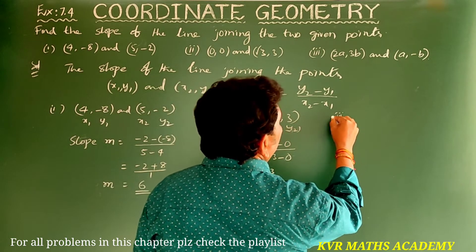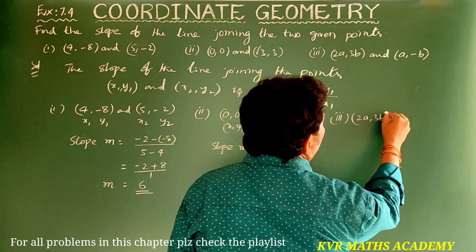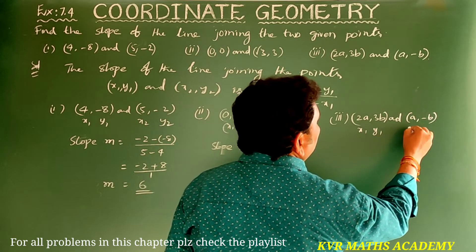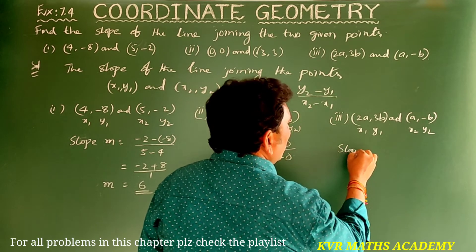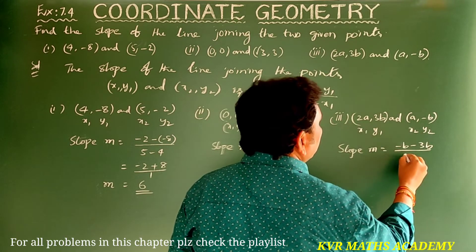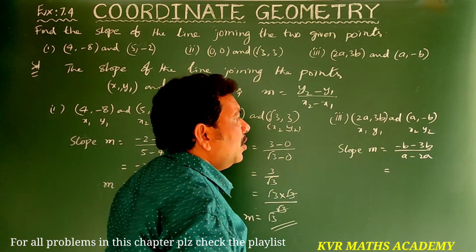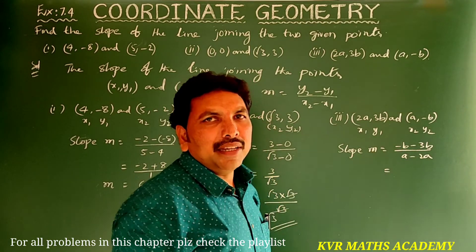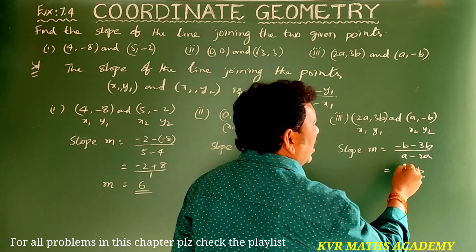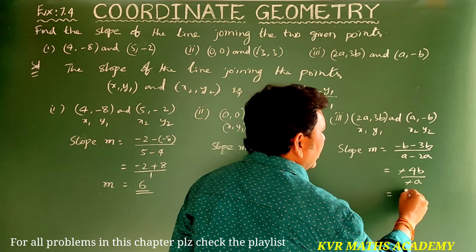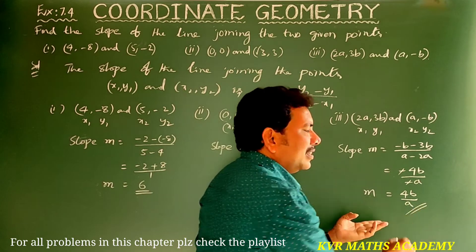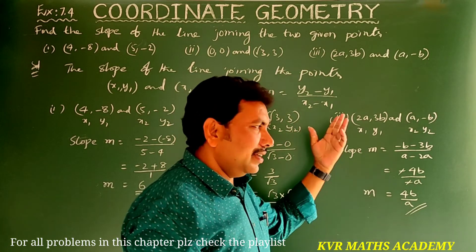Third one: given points are (2a, 3b) and (a, -b). These are x1, y1 and x2, y2. Slope m = (-b - 3b) / (a - 2a) = -4b / (-a). The negatives cancel, so slope m is equal to 4b/a.